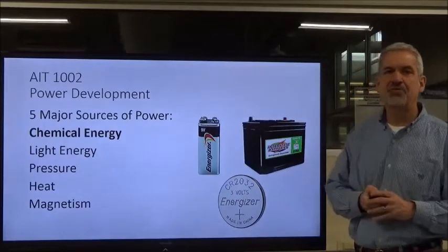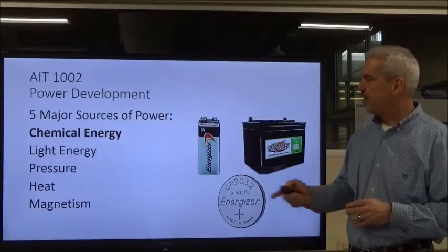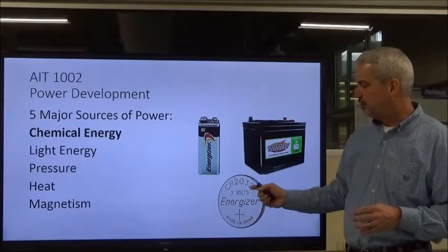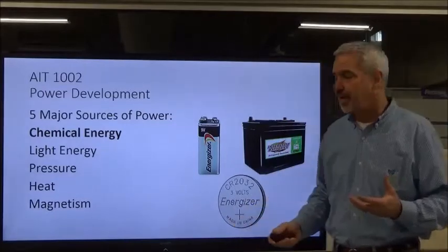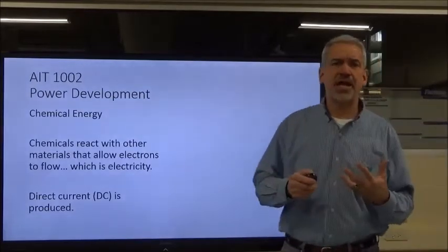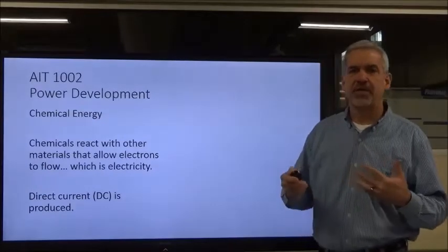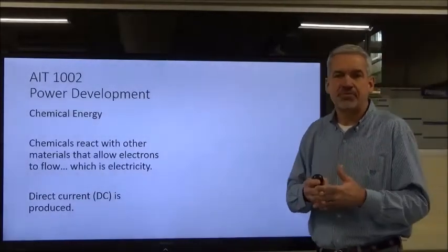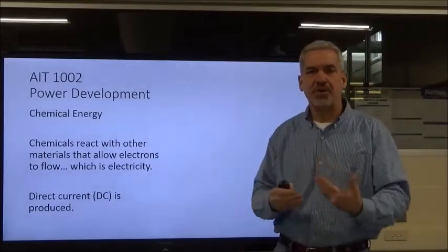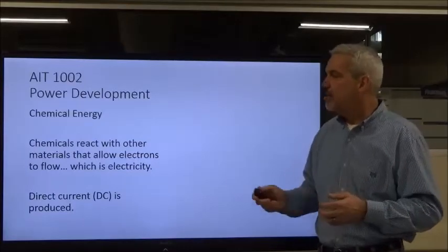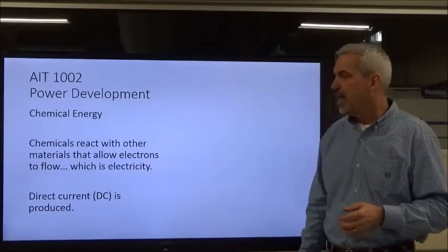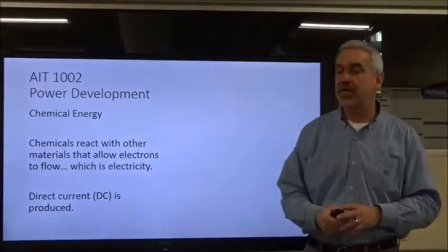Chemical energy — the most common thing you've probably seen it used in is a battery: nine-volt, your car battery, different specialized batteries. We get electricity out of a battery when chemicals react with different types of metals, allowing electrons to be released and flow from one metal to the other. The most important thing here is that chemicals react with the metals inside a battery, and that battery produces DC electricity, or direct current.